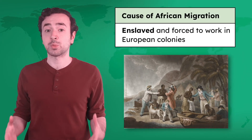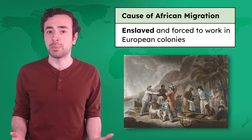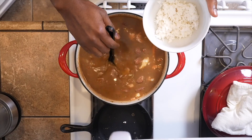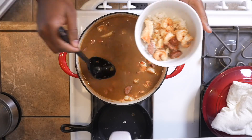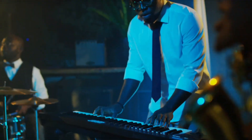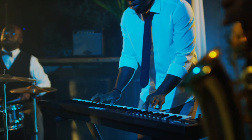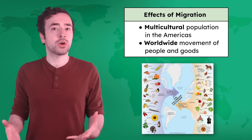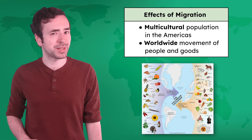European colonists also forced a mass migration of a different group of people: enslaved people from Africa. Millions of Africans were taken from their homes, enslaved, and forced to work in European colonies, which increased African populations in the Americas. But enslaved Africans maintained incredible strength during this forced migration, holding onto cultural traditions like food and music that eventually blended with European and Native American cultures. The Columbian Exchange led to a multicultural population in the Americas and laid the foundation for the worldwide movement of people and goods — a trademark of today's globalization.